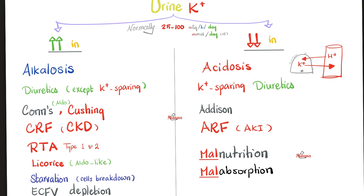Chronic renal failure — a kidney that has failed to reabsorb potassium — so potassium shows up in the urine. Type 1 and type 2 RTA are usually associated with hypokalemia, because potassium is lost through the urine. But in type 4 RTA, it's usually hyperkalemia, so type 4 would be a cause of low urine potassium. Licorice acts like aldosterone, which hates potassium, dumping potassium in the distal and collecting ducts. During starvation, cells are broken down, which raises potassium in the blood, and this potassium will eventually leave through the urine.